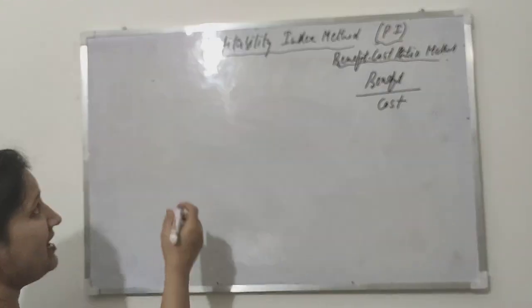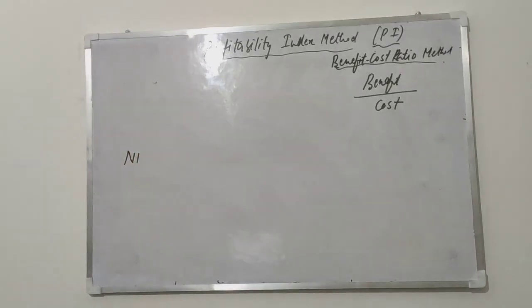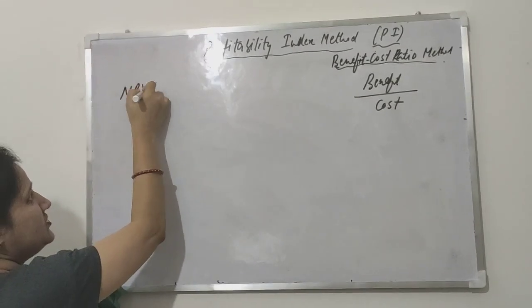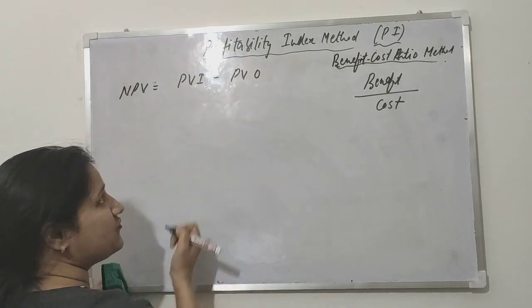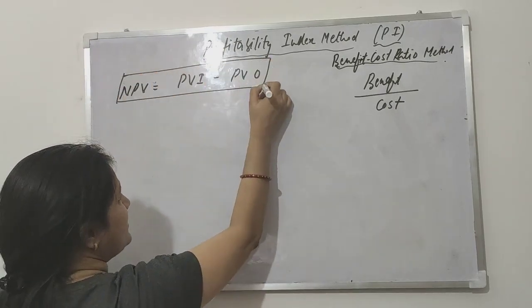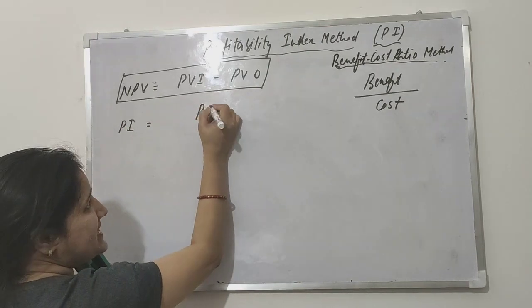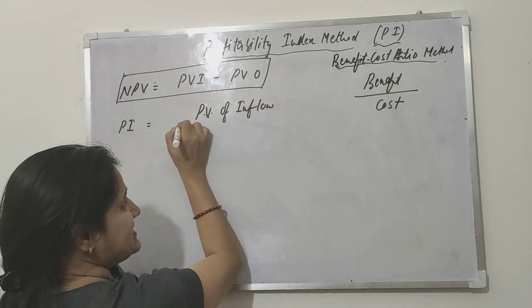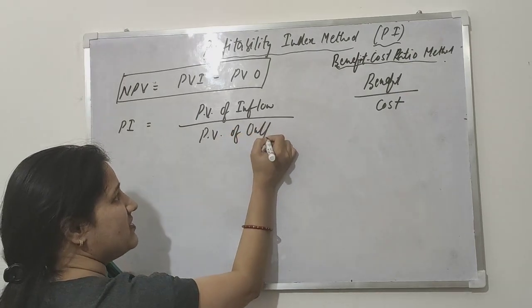In NPV, the formula to calculate NPV was present value of inflow minus present value of outflow. To calculate PI, that is profitability index, the formula is present value of inflow divided by present value of outflow.